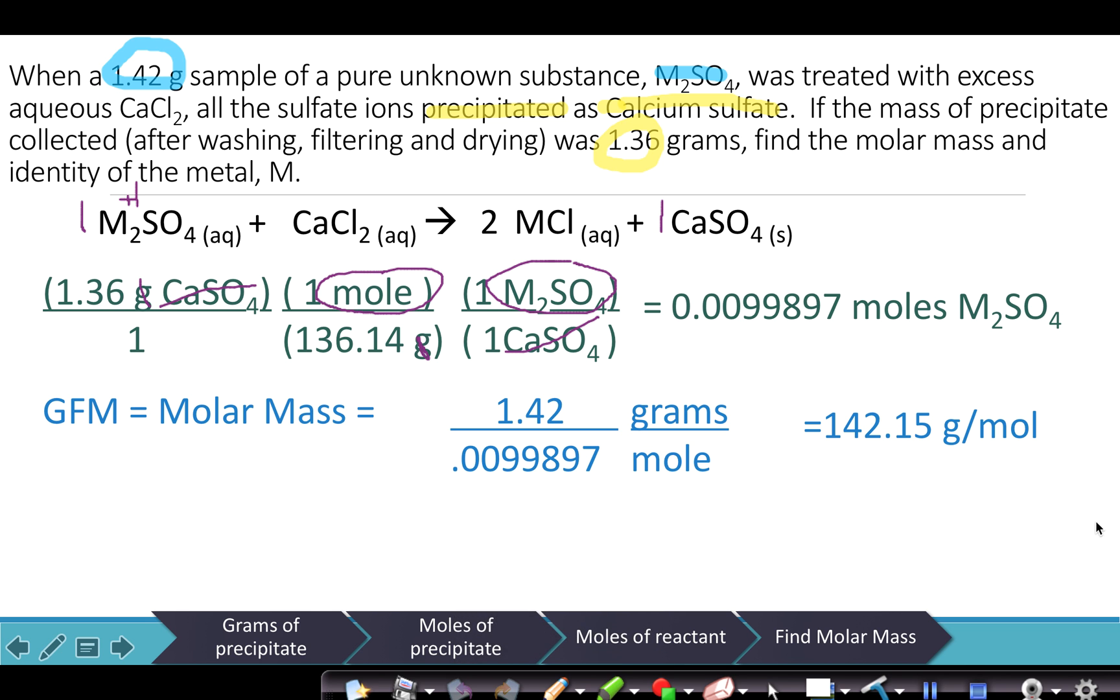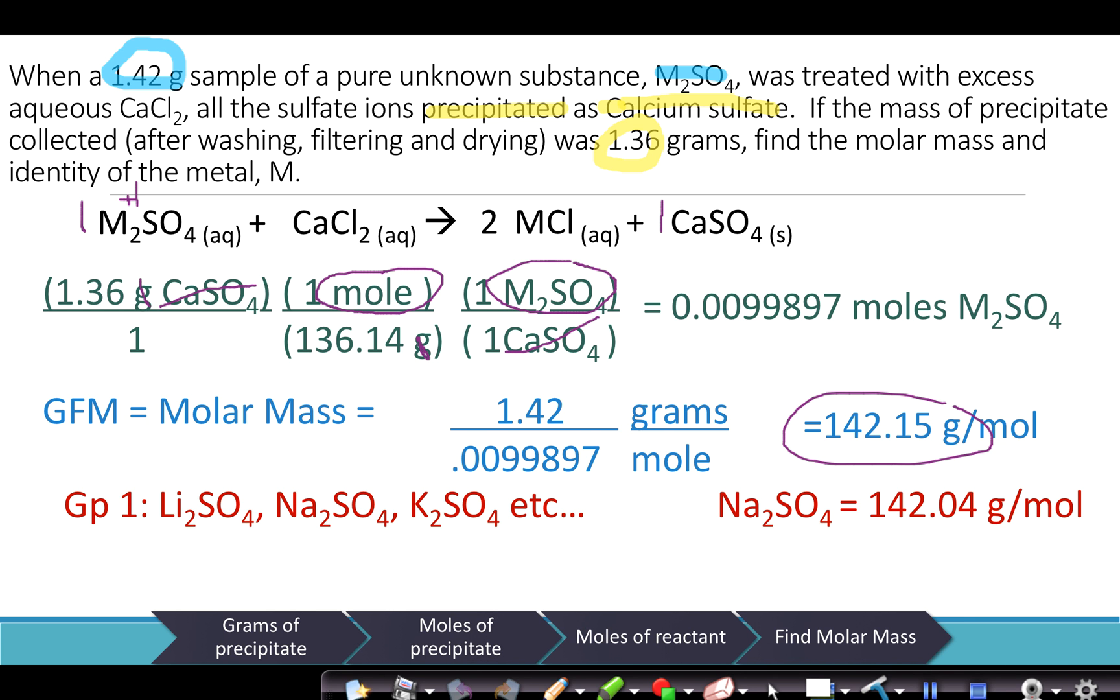Now because in the beginning we said that M had a plus 1 charge, we're going to look at the gram formula masses for the Group 1 metal sulfates. We're going to look at lithium sulfate, sodium sulfate, potassium sulfate, and we're going to try to see which one of those is closest to 142.15. And when we do that, we find a winner in sodium sulfate, so the gram formula mass of the unknown metal sulfate is 142.04, and the identity of the metal is sodium.